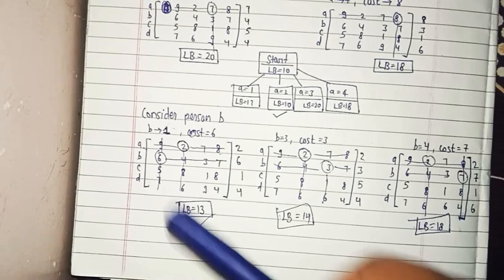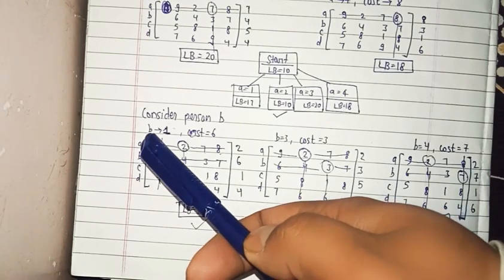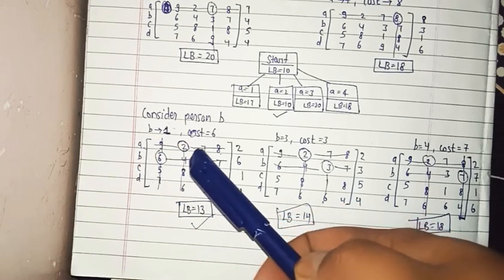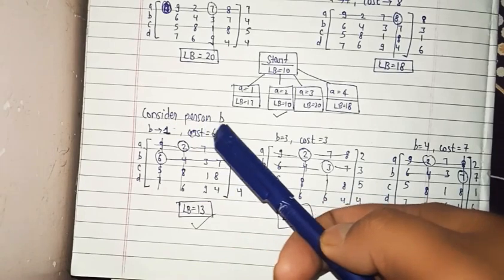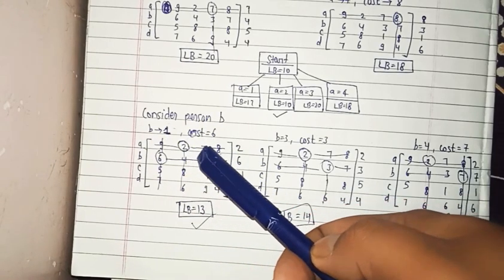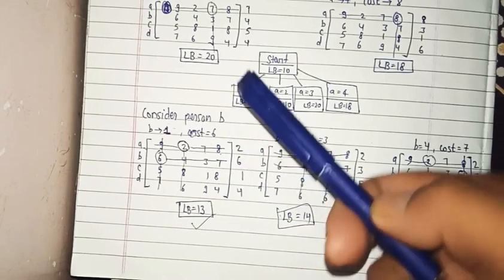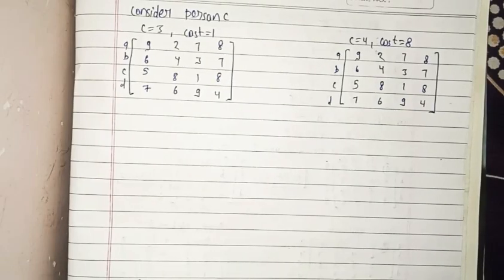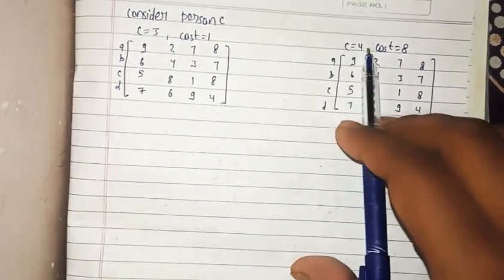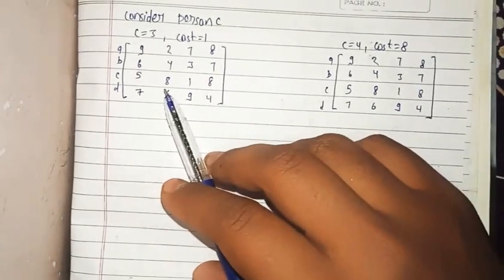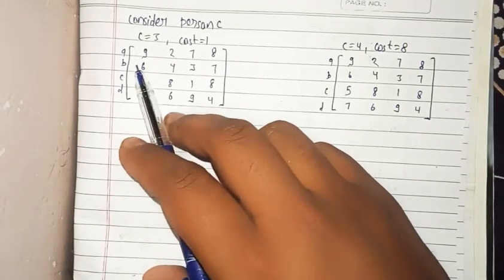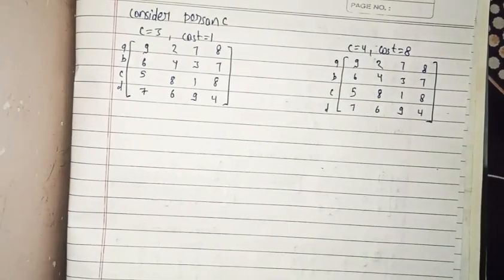The result so far: job 2 is assigned to person A and job 1 is assigned to person B. When considering person C, we do not need to evaluate jobs 1 and 2, since persons A and B have already taken job 2 and job 1 respectively. We go directly to jobs 3 and 4.